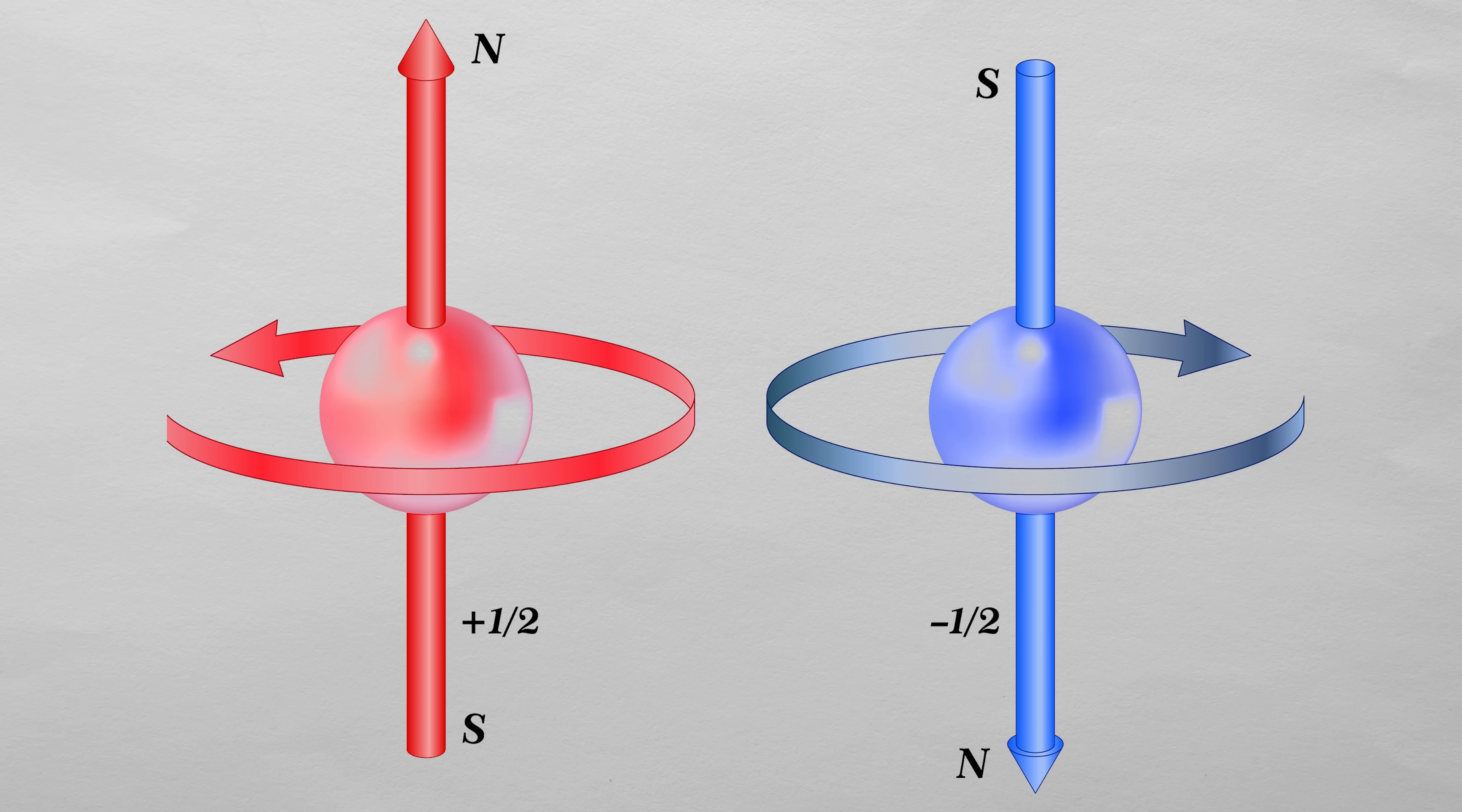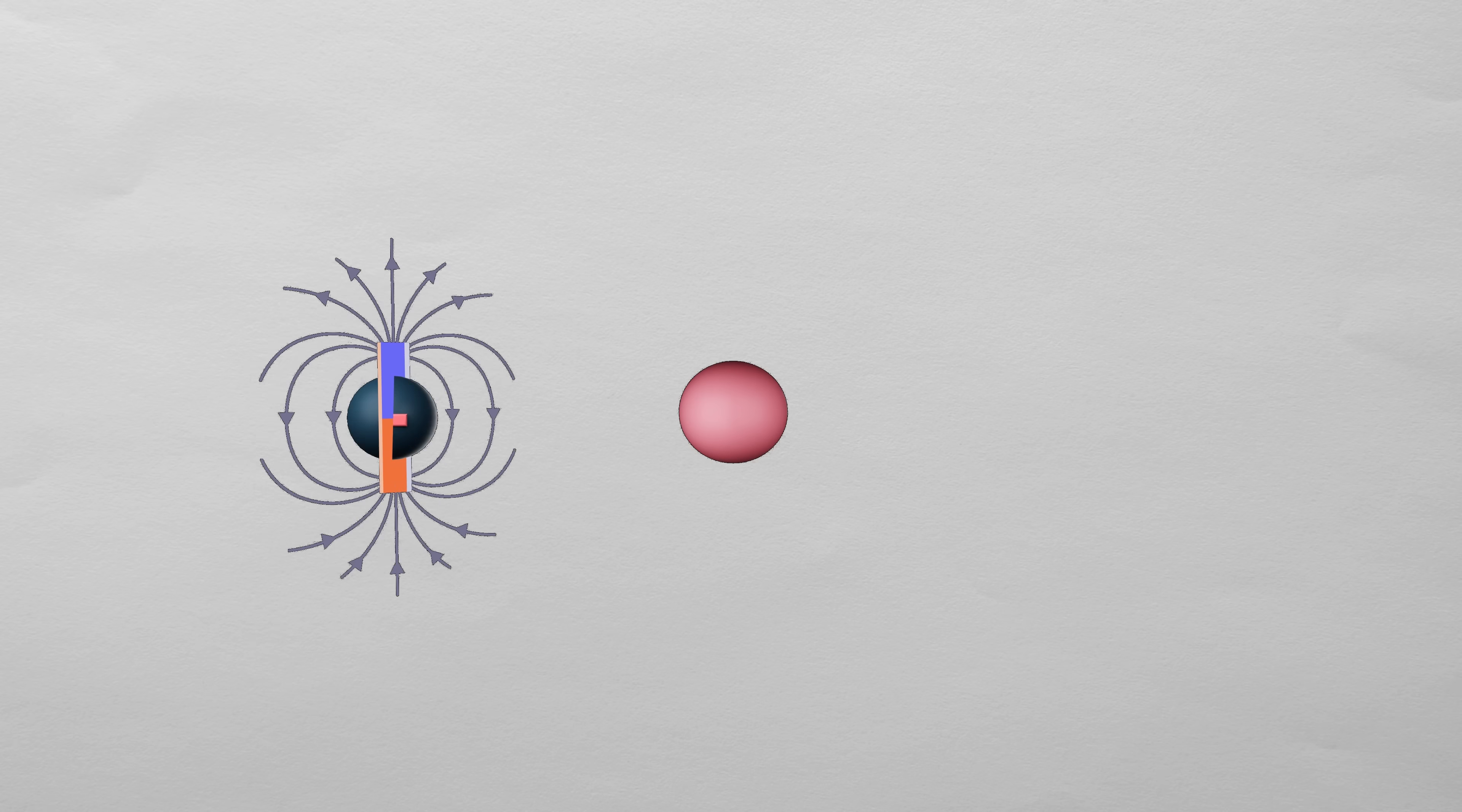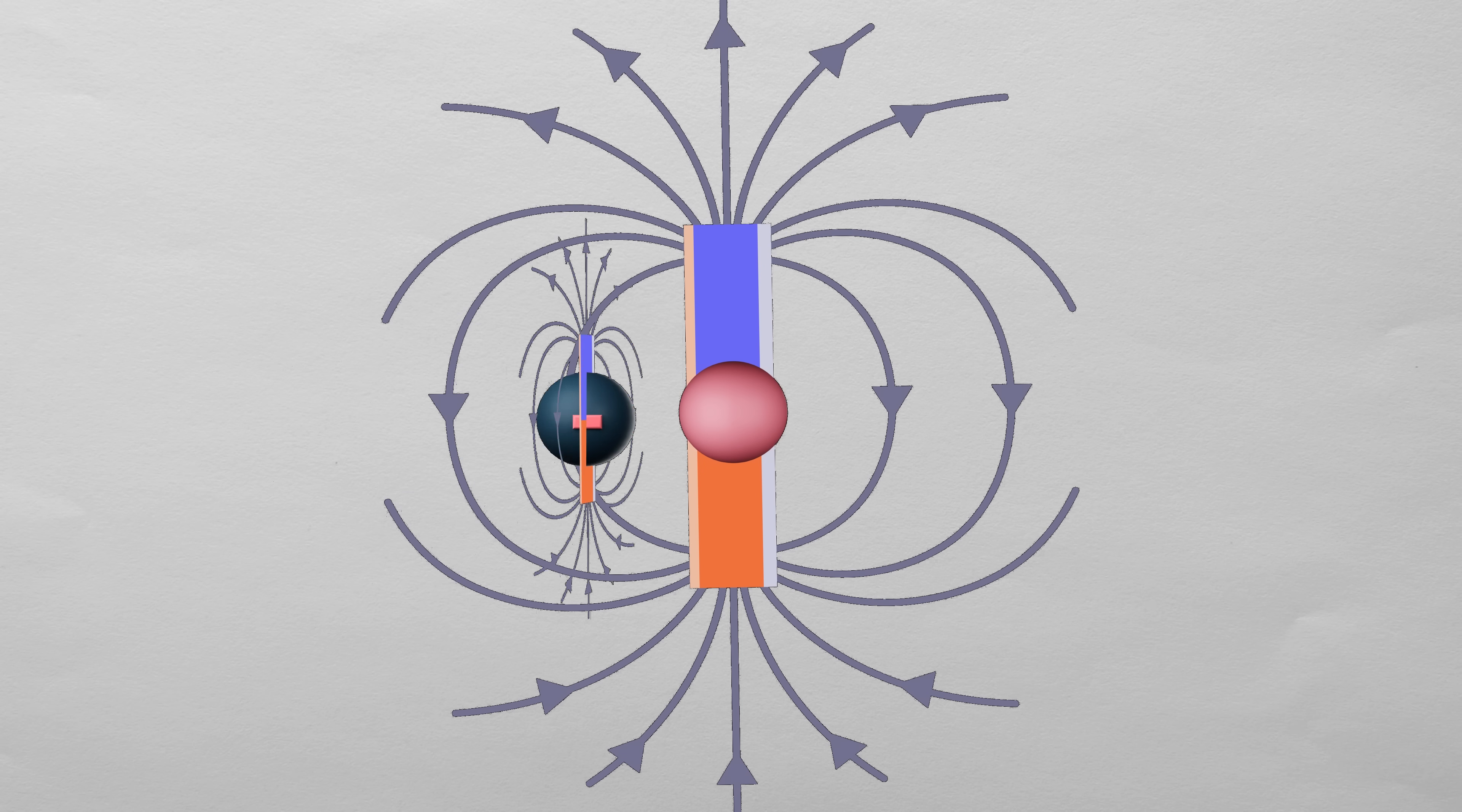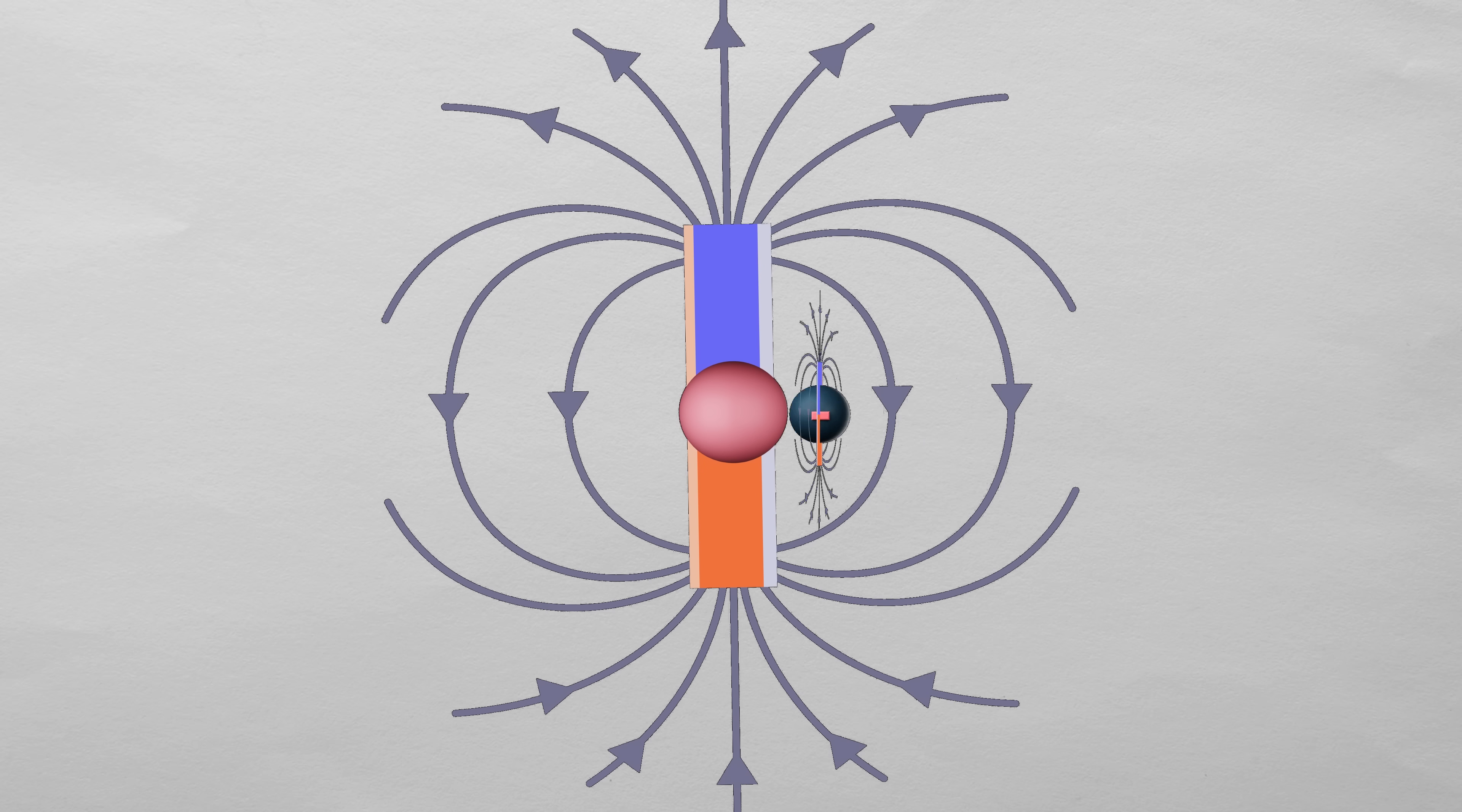This spin also creates a tiny magnetic field called the intrinsic magnetic moment. So electrons can have spin up or spin down, meaning their magnetic field can point up or down. This is separate from their orbital magnetic moment. So orbiting electrons have their orbital magnetic moment, which makes a magnet, and also the electron itself is also a tiny magnet.